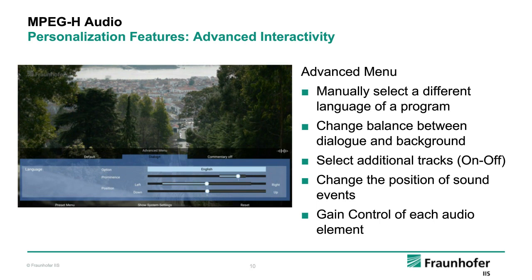The broadcaster can also enable more advanced features. Perhaps not many people would want this level of control, but it is possible to allow the user sliders so they can adjust sound exactly to their own preference. The language English has been selected, and the prominence of dialogue can be turned up and down. We can also move it in position — with stereo, from left to right; with immersive surround sound, also up and down. It can help understanding if dialogue is moved to a slightly different position from the rest of the sounds.